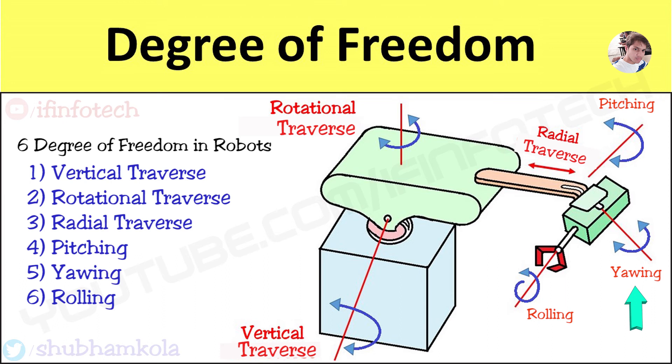Second is yawing motion. This provides right or left swivel to wrist. Third is rolling. This provides rotation to end effector. So these are the 6 degrees of freedom in polar type robot.